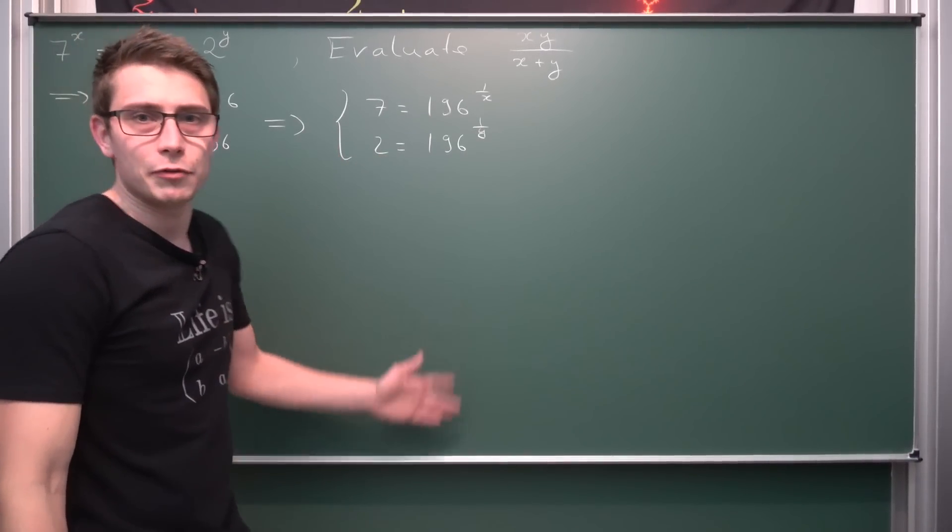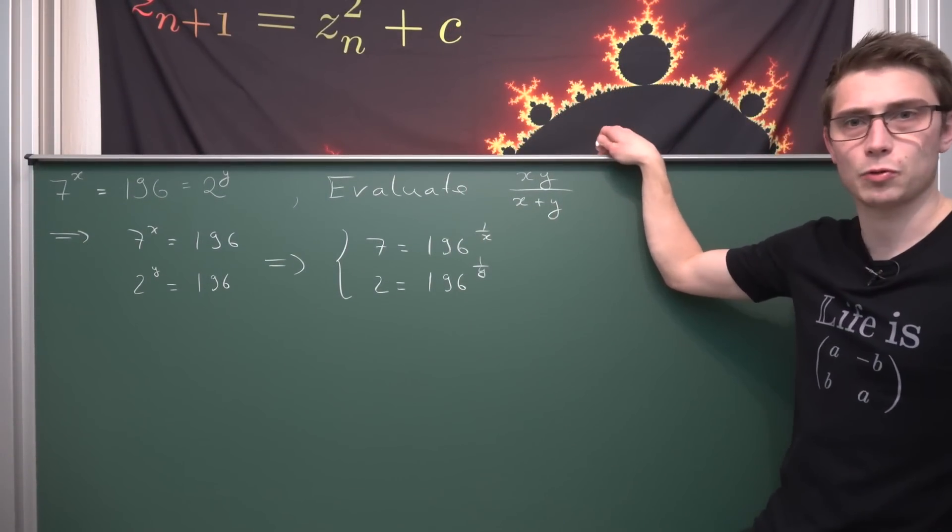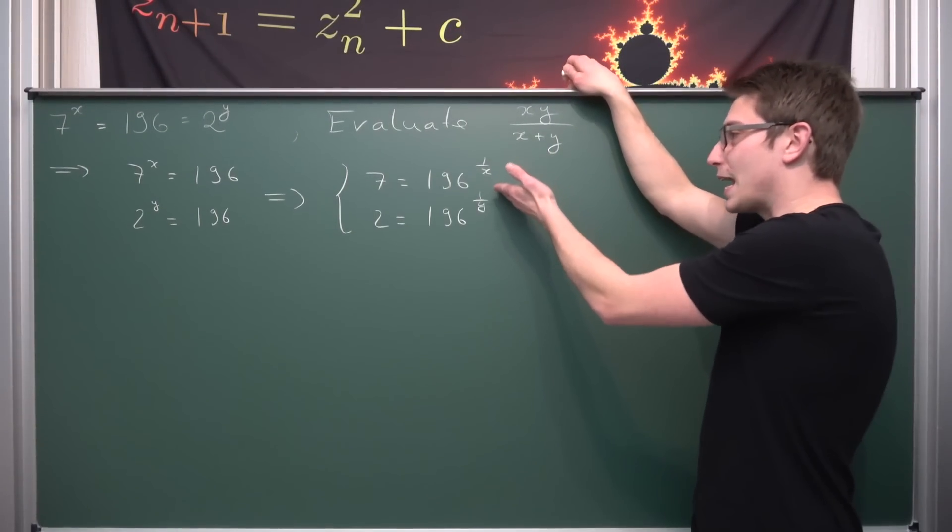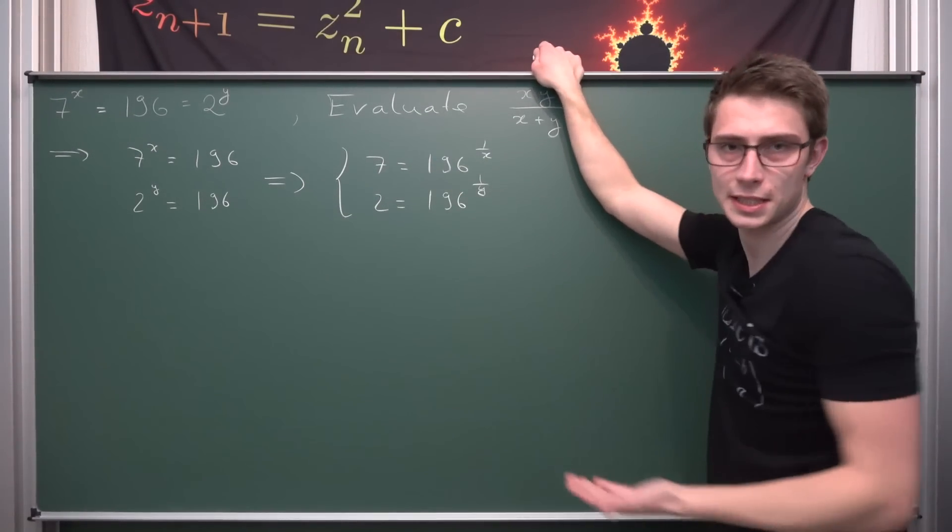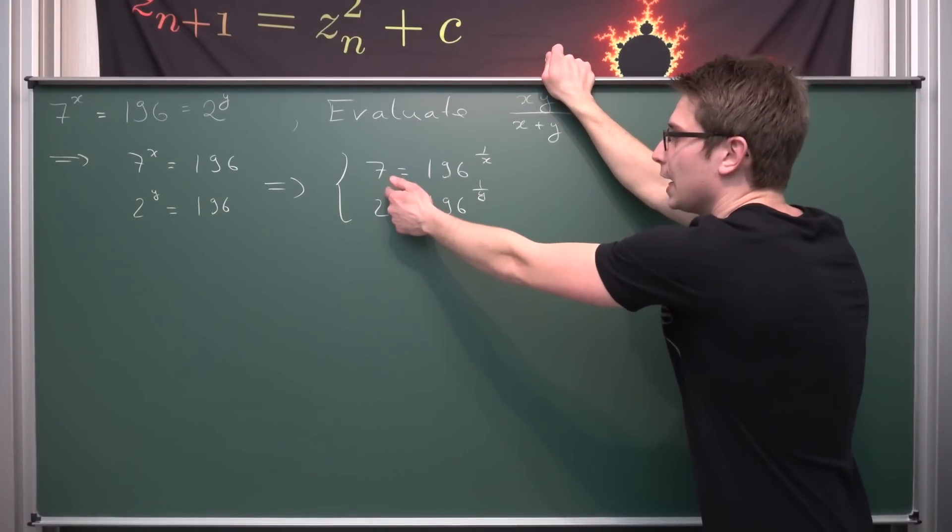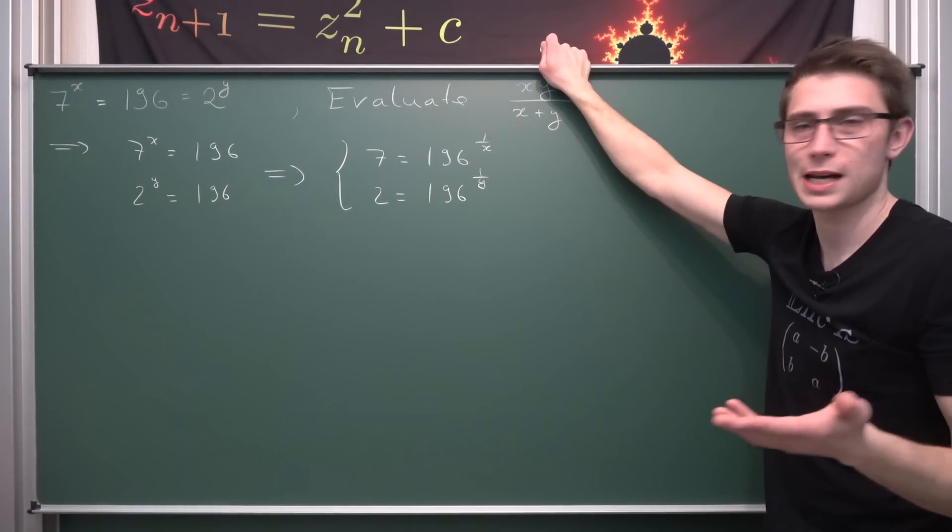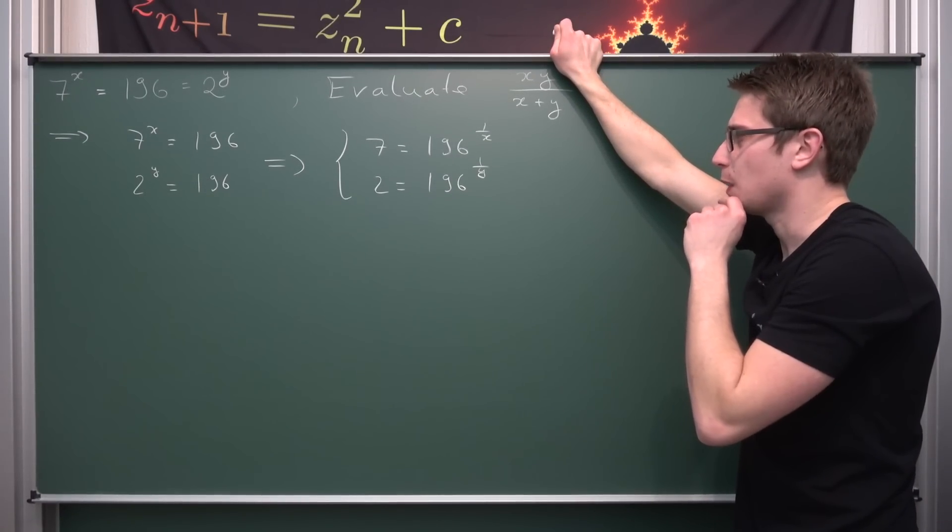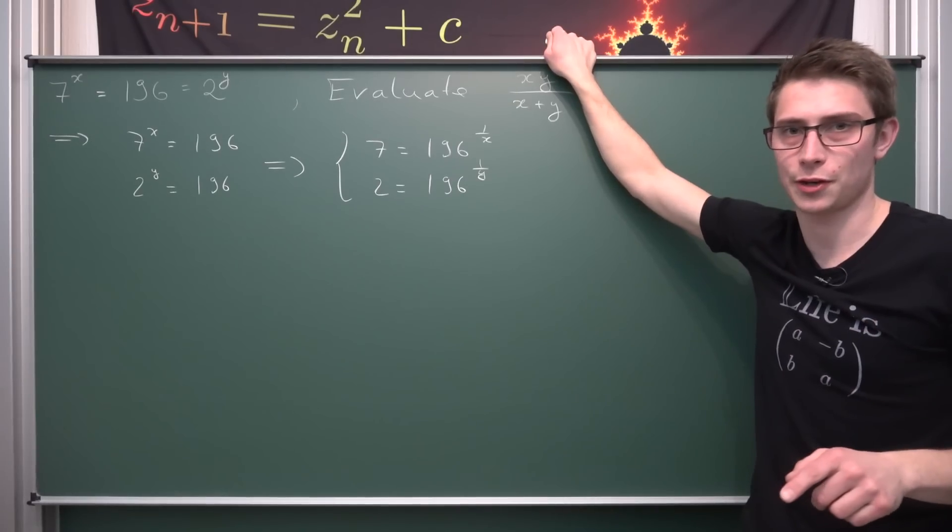If we have a system of equations given, what we can do is manipulate these equations. We could for example add those two equations, but if we were to add those, on the left-hand side that totally checks out, we get 9. On the right-hand side, we get 196 to the 1 over x power plus 196 to the 1 over y power. This doesn't work out nicely.